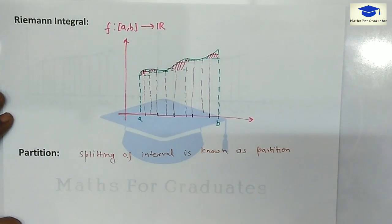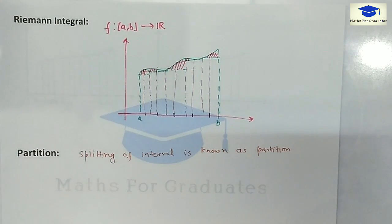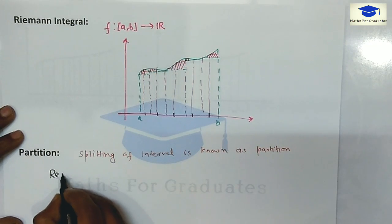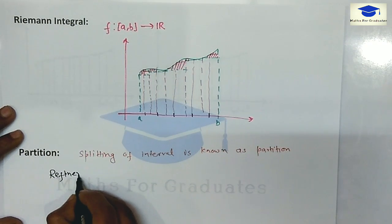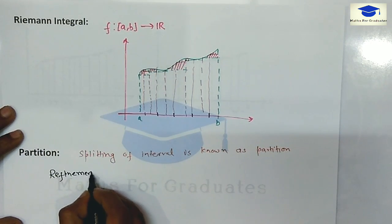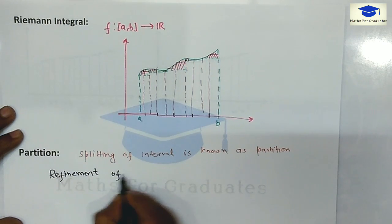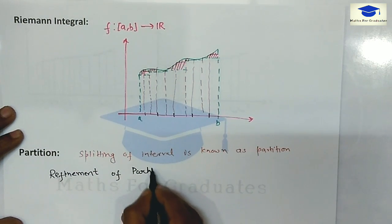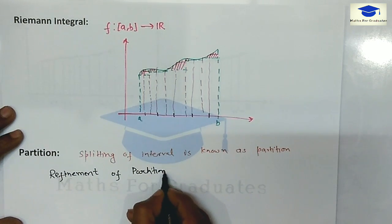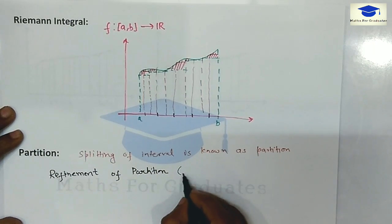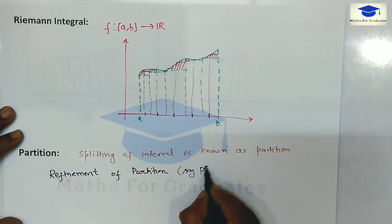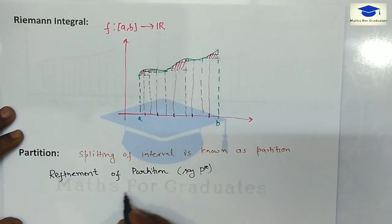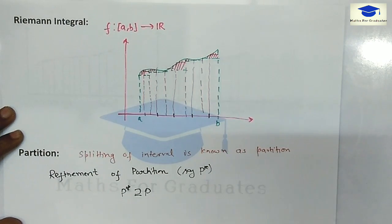This further splitting is known as refinement of the partition. P* is said to be a refinement if it contains its previous partition P.